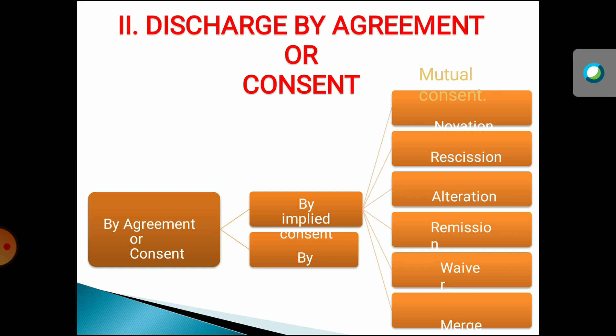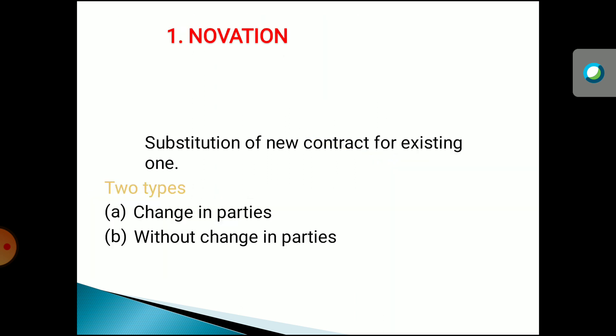Discharge by agreement is done by implied consent, under novation, rescission, alteration, remission, and waiver. Novation means where in place of the old contract you are bringing some new contract. The old contract was present, but a new substituted contract is brought in and the old contract comes to an end.